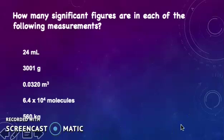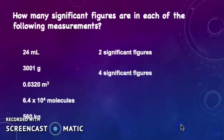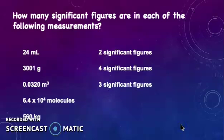Let's check the answer. The first question, 24 milliliter has 2 significant figures, 3001 gram has 4 significant figures, 0.0320 meter cube has 3 significant figures, 6.4 times 10 to the power of 4 molecules has 2 significant figures,